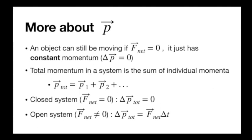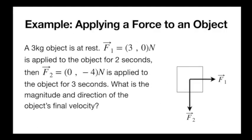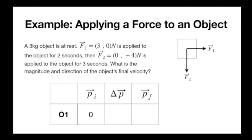The total change in momentum equals the net external force times ΔT, which would be ΔP1 + ΔP2 + ΔP3. Let's do an example: we have a 3 kg box. I first apply F1 to the right for 2 seconds (getting an x-component), then apply F2 pointing down with a negative y-component for 3 seconds. I want to know the final velocity — magnitude and direction — assuming it started at rest. Let's first do it conceptually using a momentum chart.